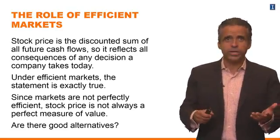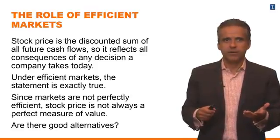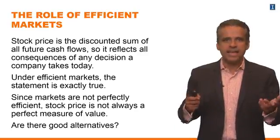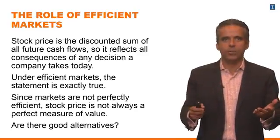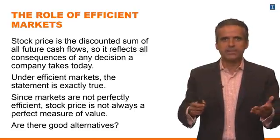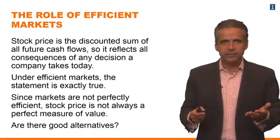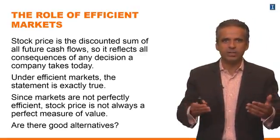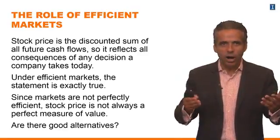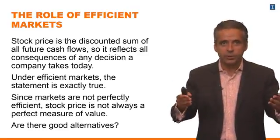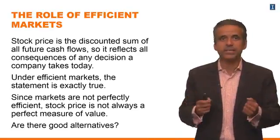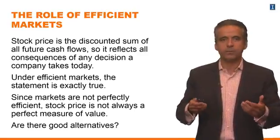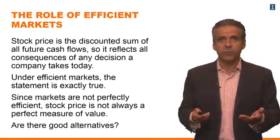An important notion here is the role of the efficient market. The idea that the stock price reflects all consequences of any decision that a company takes today relies on the assumption that markets are efficient. Of course, markets are not perfectly efficient, so the stock price is not always going to be a perfect measure of shareholder value. There will be a discrepancy between stock prices and shareholder wealth. So we have to think: are there good alternatives? Is there something else we can look at?